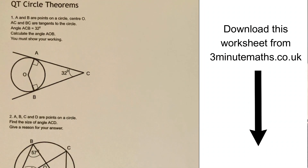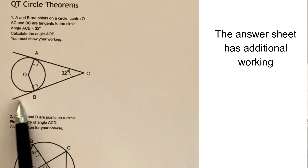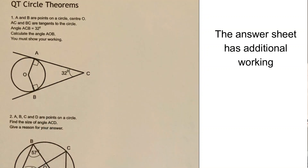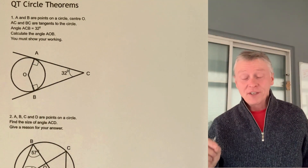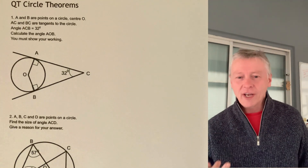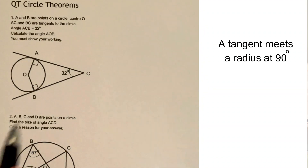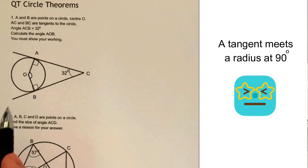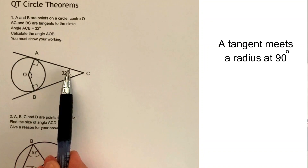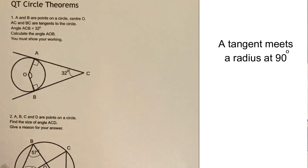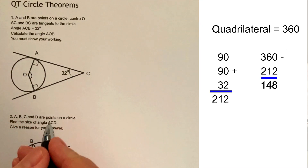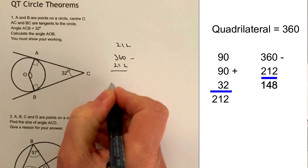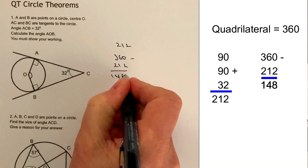In the first question we're looking at two tangents across a circle. A tangent meets the radius of a circle at 90 degrees. In this particular one they told us it's 90 degrees, however under normal circumstances you don't get told that. But it does mean that we've got a quadrilateral, and in a quadrilateral all of the angles add up to 360 degrees. So all we would do is add up 90 plus 90 plus 32, which is equal to 212.